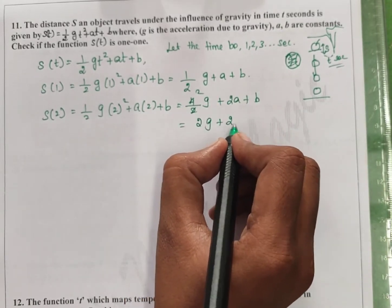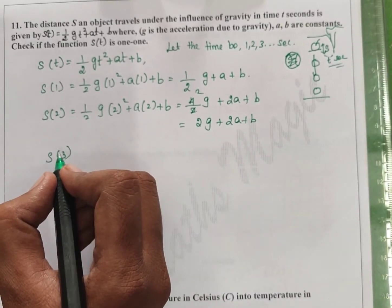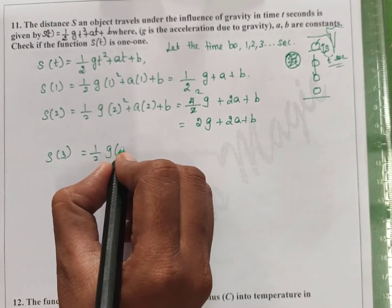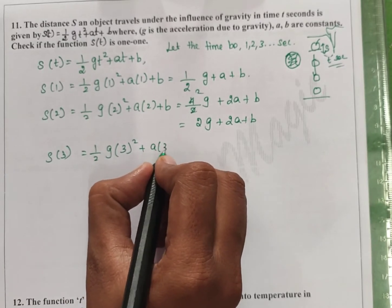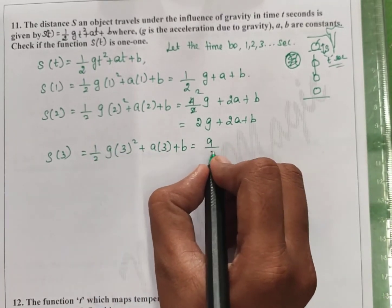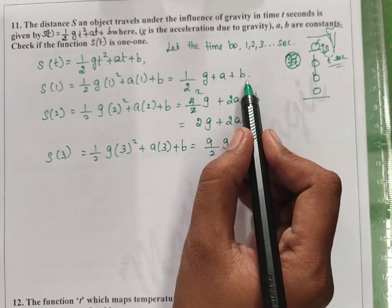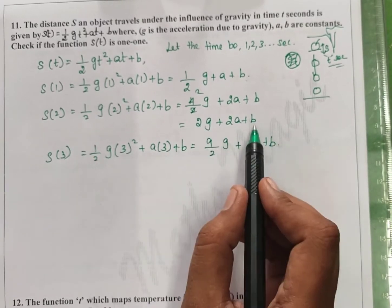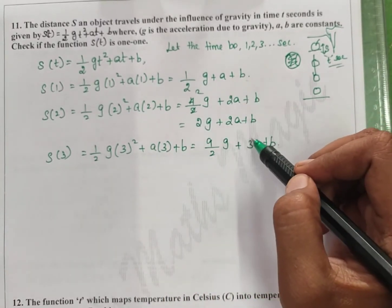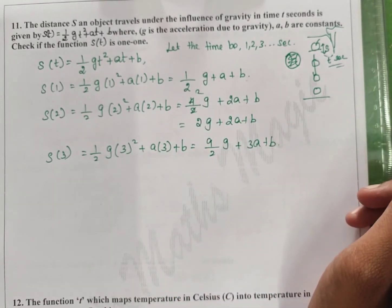For s(3), we substitute half into g into 3 squared plus a into 3 plus b. Since 3 squared is 9, this gives 9 by 2 g plus 3a plus b. Now we substitute half g plus a into 2.